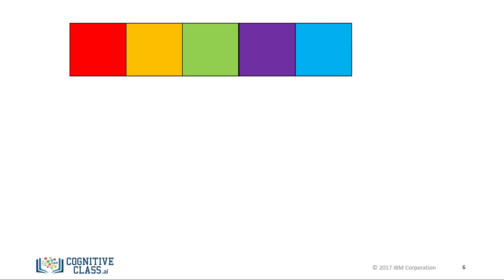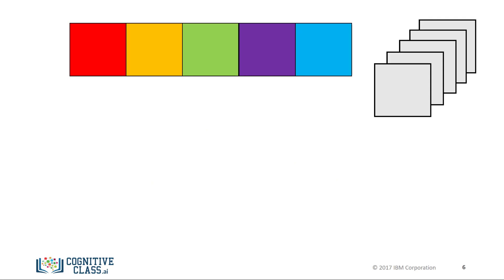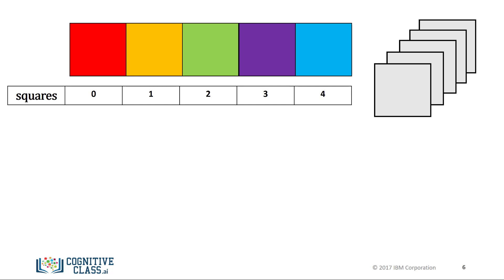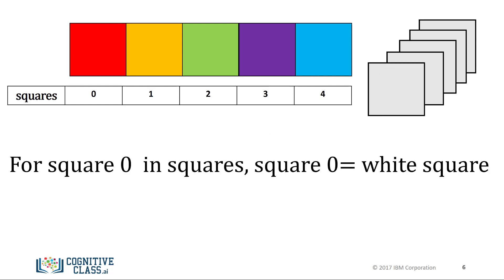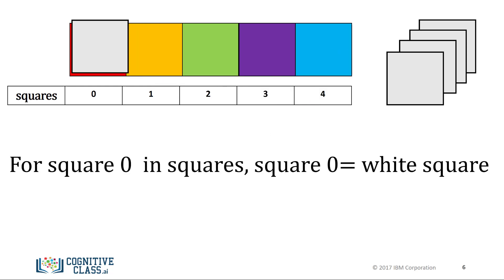Loops perform a task over and over. Consider the group of colored squares. Let's say we would like to replace each colored square with a white square. Let's give each square a number to make things easier, and refer to all the group of squares as squares. If we wanted to tell someone to replace square 0 with a white square, we can say: for square 0 in squares, square 0 equals white square.